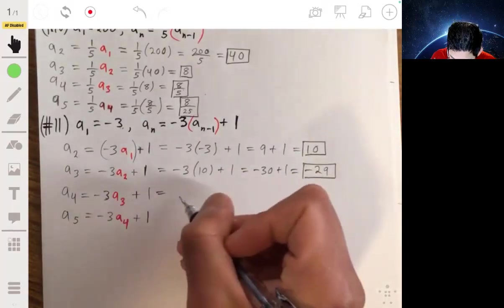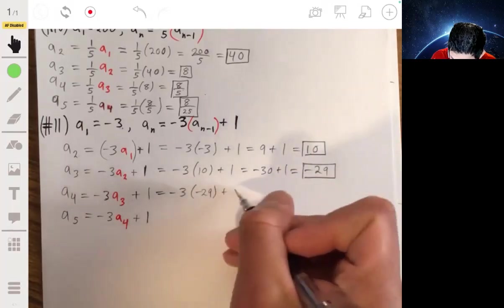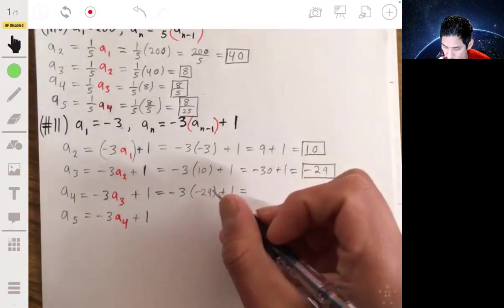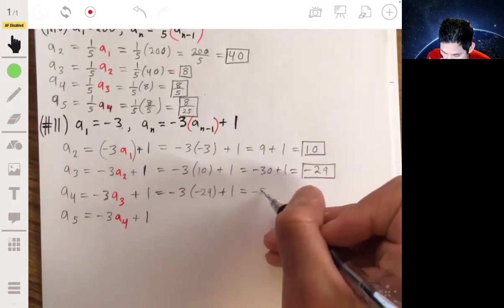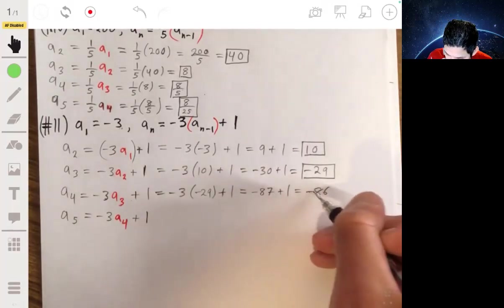a4 would be negative 3 times negative 29 plus 1, which would be 87 plus 1, or negative 86.